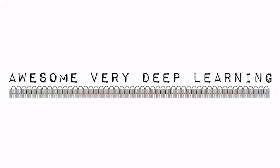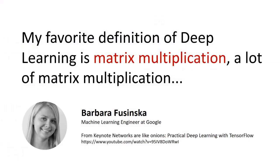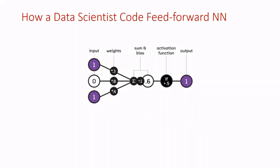What is deep learning actually? Jeff Dean from Google described it as: when you hear the term deep learning, just think of a large deep neural network. Deep refers to the number of layers typically. But I like Barber's definition much more. It describes deep learning as matrix multiplication — a lot of matrix multiplication. Turning back to the neural unit, we can adapt Barber's definition: if input x and weights are column vectors, then transposed weights times input will give the same value. We don't have to write a for loop, and this approach is cleaner.